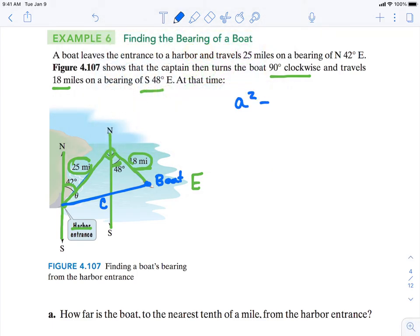A squared plus B squared equals C squared. So we'll let this be side A and that side B. And then C is that distance the boat is from the harbor. So we substitute in the A value and the B value.